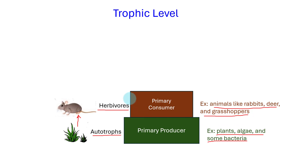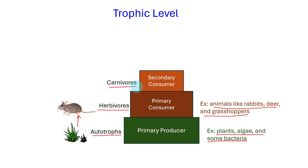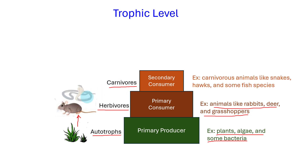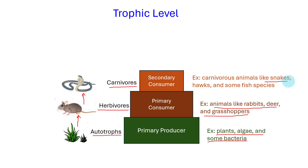Then come the secondary consumers. These are carnivores that primarily feed on herbivores. Carnivores are solely meat-eaters, while omnivores have a mixed diet, consuming both plant and animal material. Examples of secondary consumers include carnivorous animals like snakes, hawks, and some fish species.